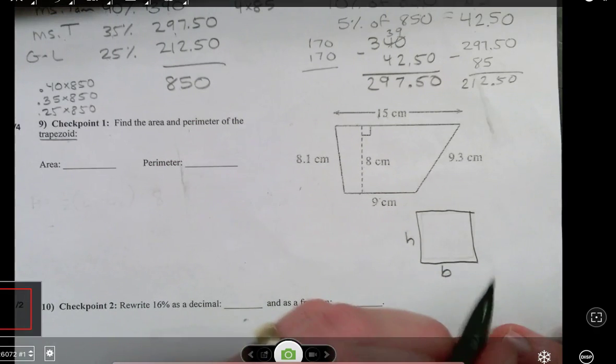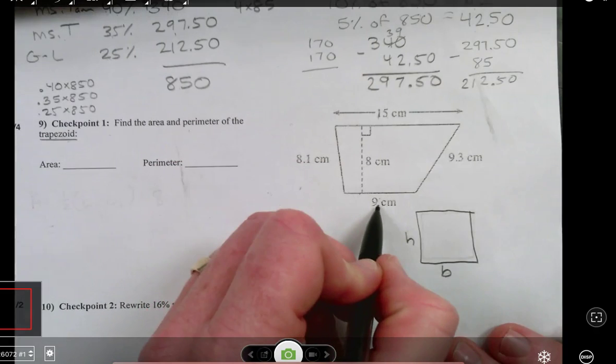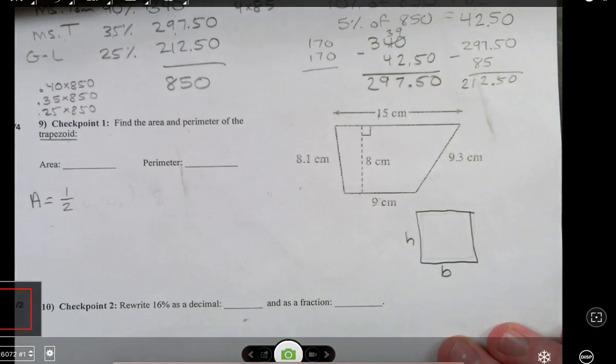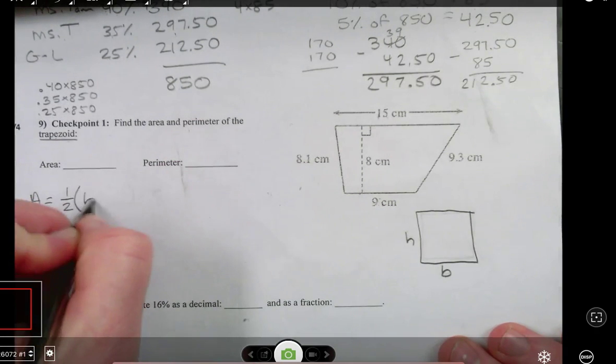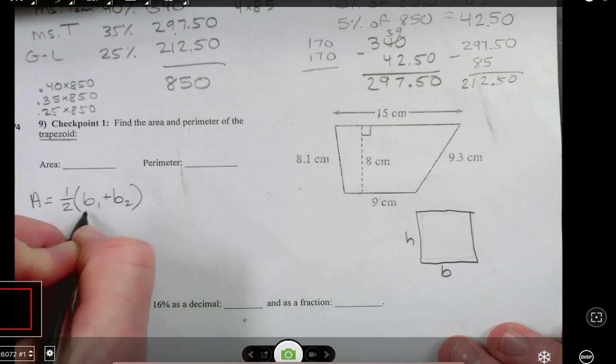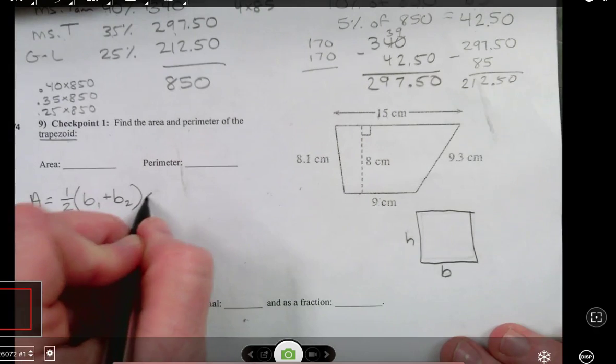So we need to find the average between these two bases. And what do I mean by that? I mean we're going to add them together and then divide it by two to find the average. So the formula for area of a trapezoid is one-half base one plus base two. We're just finding the average between these two numbers. And then we're going to multiply it by the height.